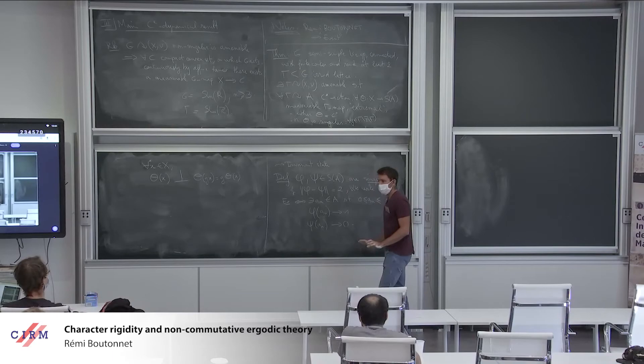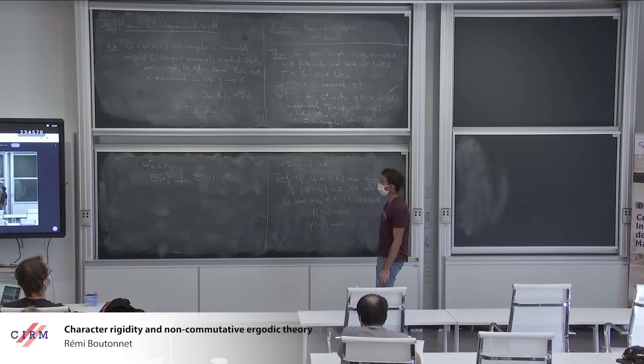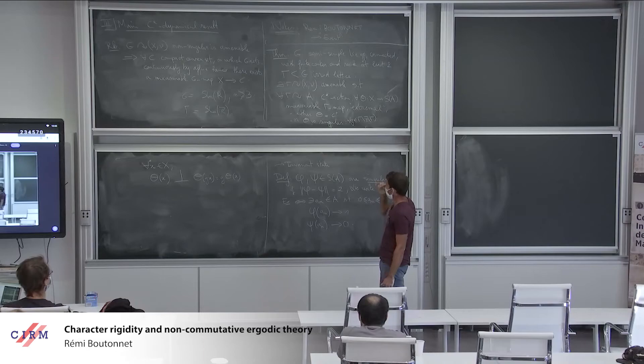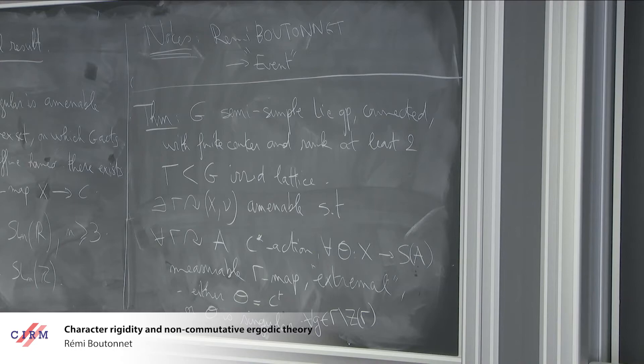In this case, X will be a Poisson boundary of Γ, and this is crucial — otherwise I don't know how to prove this theorem. Let me mention: all the applications I'm going to talk about are also true for lattices in algebraic groups, in semi-simple algebraic groups. But this theorem I can only prove for lattices in Lie groups, because it relies on Furstenberg's construction of a measure on Γ which has precisely G/P as its Poisson boundary.